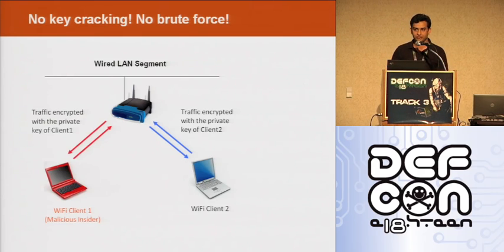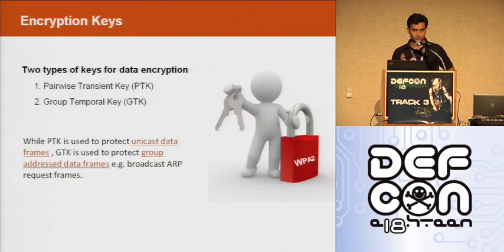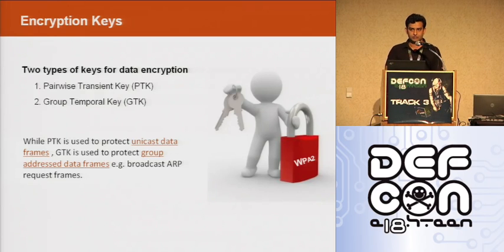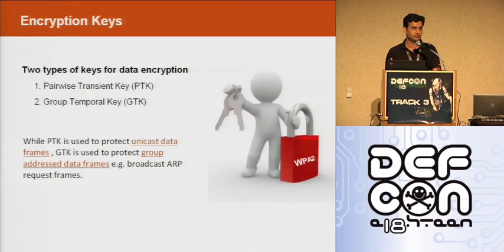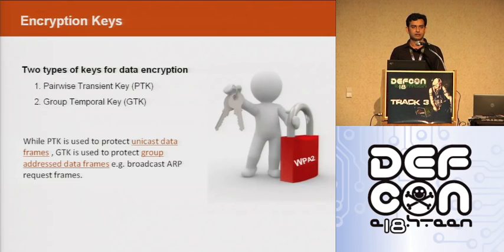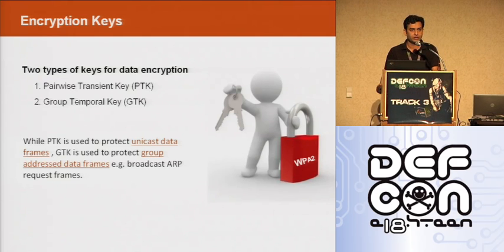Let's walk through the presentation and see. In WPA2 protocol, there are two types of keys used for packet encryption. One is called PTK — pairwise transient key — and the other is GTK — group temporal key. The purpose of PTK is to protect unicast traffic, while the purpose of GTK is to protect broadcast or multicast traffic.